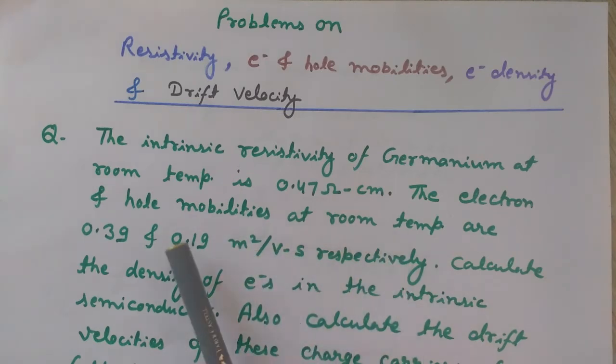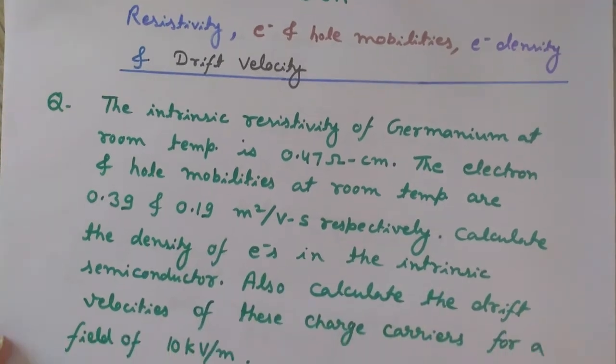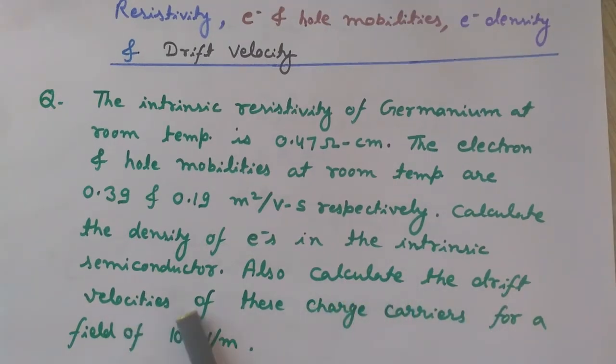These units are meter square per volt second because we know that velocity drift equals mu into E. So from this we can get the mobility equals velocity drift divided by electric field, therefore its unit is meter square per volt second. So I want to calculate now the density of electrons in the intrinsic semiconductor. Also we will calculate the drift velocities of these charge carriers for a field of 10 kilovolt per meter.